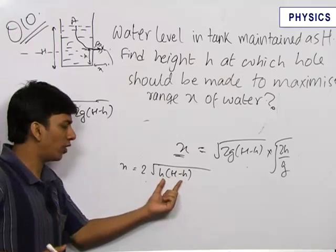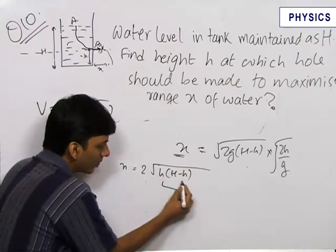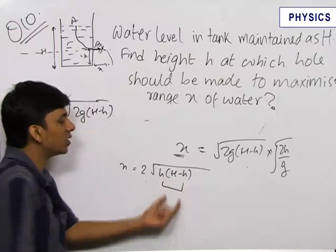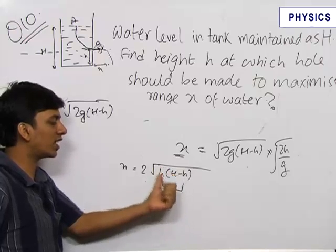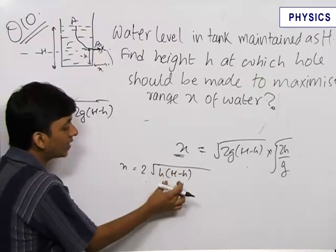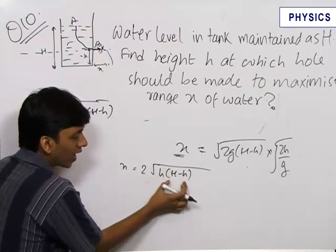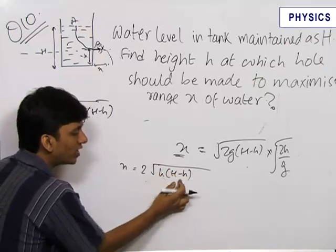As I told you before, here is a trick. Whenever two quantities in multiplication have a constant sum—here h + (H - h) = H—the product is maximum when both terms are equal.